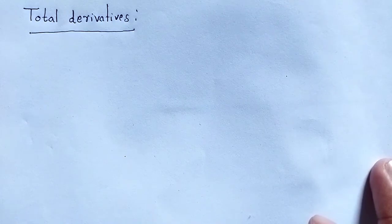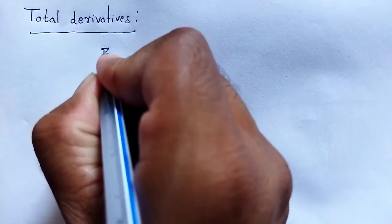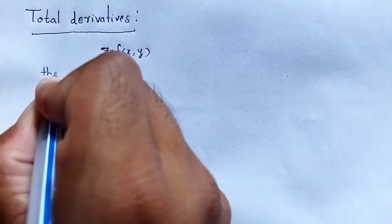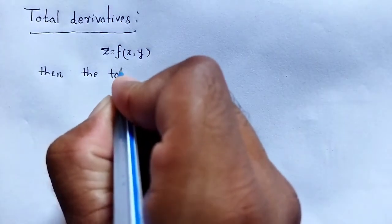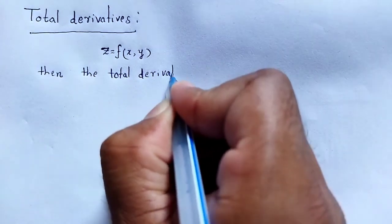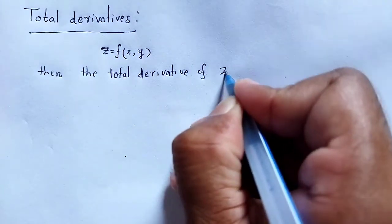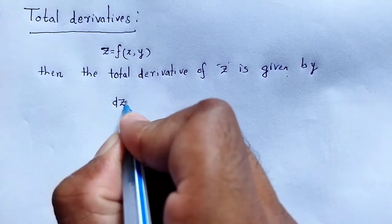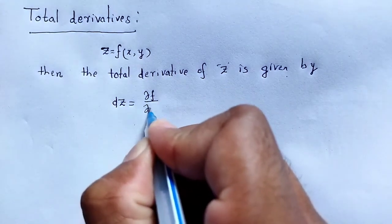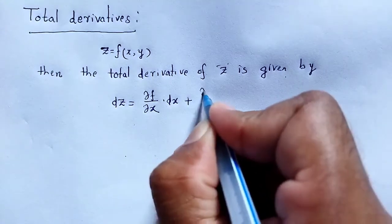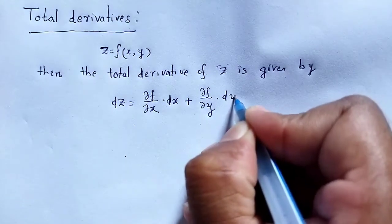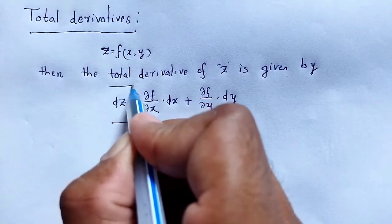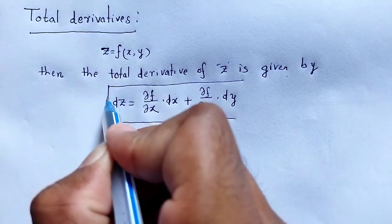First of all, we discuss what is total derivatives. If z is a function f of x, y — that is a two-variable function — then the total derivative of z is given by: dz = (∂f/∂x)dx + (∂f/∂y)dy. This is the exact derivative of the function z = f(x, y), that is a two-variable function.